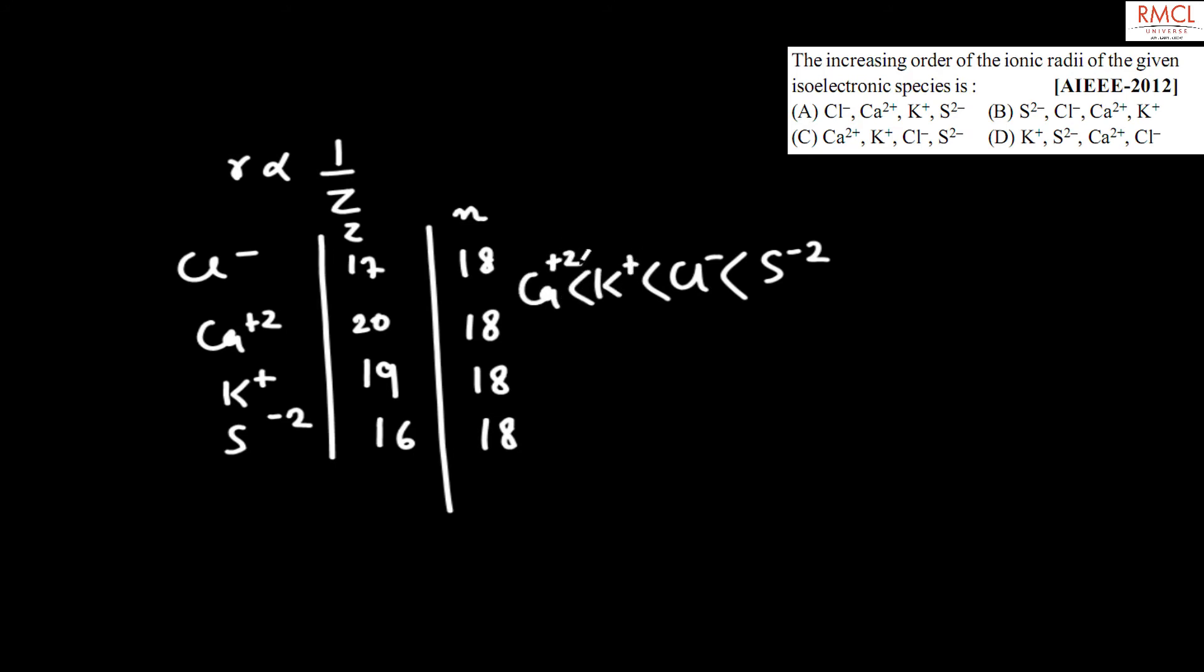Ionic radii is Ca plus 2. So the correct answer for this question is option C.